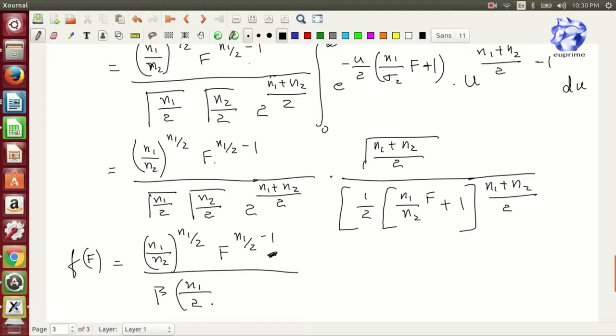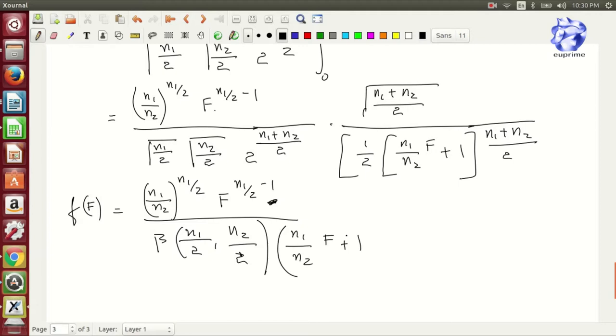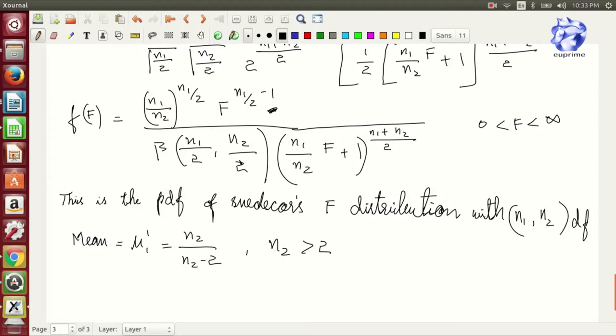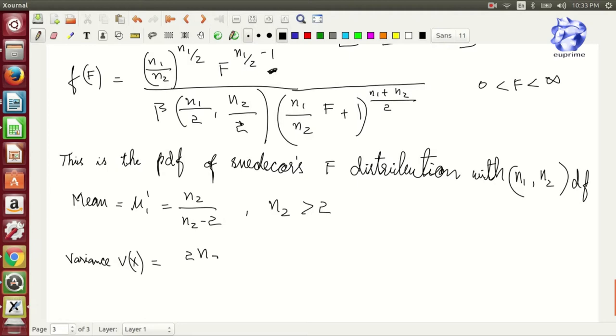Reject H0. F is in between 0 to infinity. Obviously this is the pdf of F distribution with n1, n2 degrees of freedom. Now the mean is μ1 which is equal to n2 by n2 minus 2, where n2 is greater than 2. Obviously if it is equal to 2, the mean would be division by zero error in programming terms.